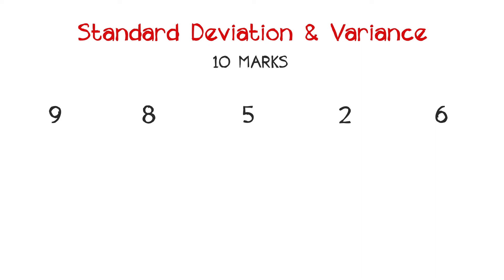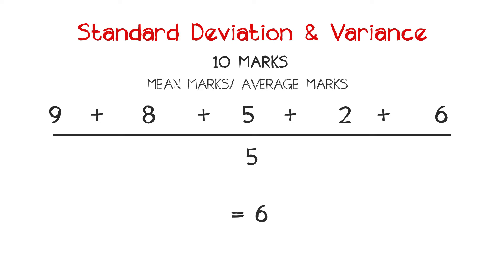So now if I tell you to calculate the mean marks or the average marks of the class like 9 plus 8 plus 5 plus 2 plus 6 divided by total number of students that is 5, the answer should come out to be 6. So the mean marks or the average marks of the class in this particular test is 6.